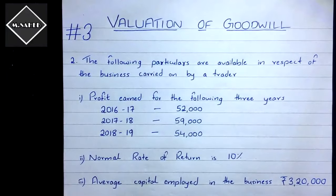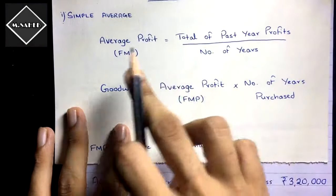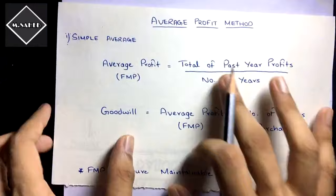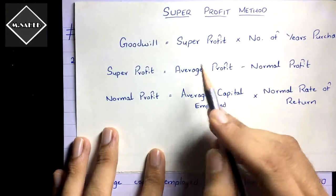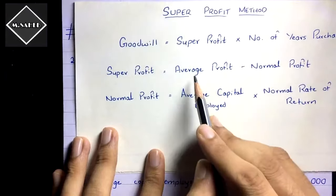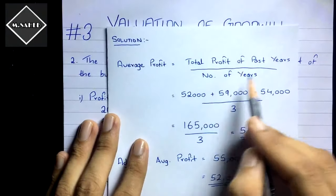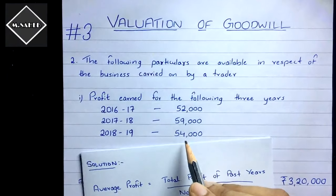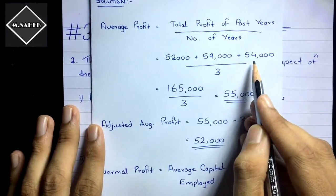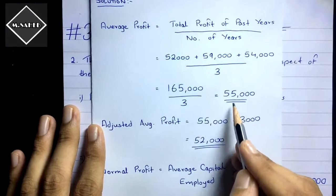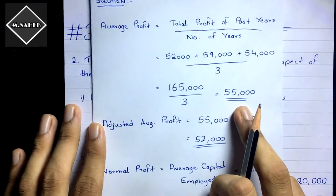First we calculate average profit. The formula is: Average Profit = Total of past year profits ÷ Number of years. So: (52,000 + 59,000 + 54,000) ÷ 3 = 1,65,000 ÷ 3 = ₹55,000.